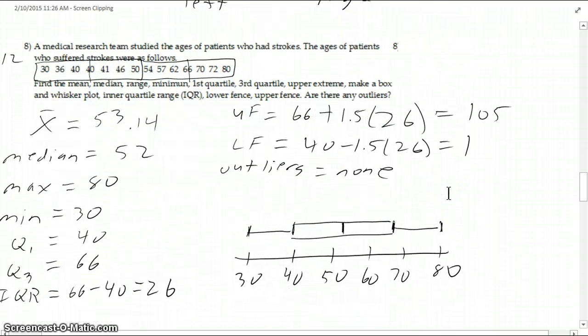And then number eight. We just divide this up. And the mean was 53.14. The median is 52, which is halfway between 50 and 54. Max is 80. Min is 30. And the quartile. So we take this top half and find the middle. So the third quartile is 66. The bottom quartile is 40. So there's seven in each half, the middle of each half. So that's the quartiles.